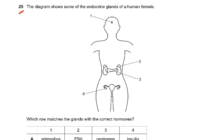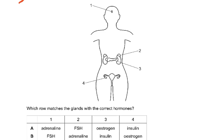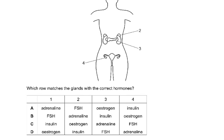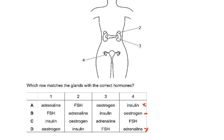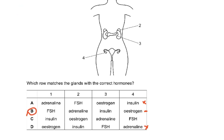Question 25. The diagram shows some of the endocrine glands of a human female: structures 1, 2, 3, and 4. Structure 4 is the ovaries, 2 is the adrenal glands, 3 is the pancreas, and 1 is the pituitary gland. Which row matches the gland with the correct hormones? Structure 4 does not produce insulin and adrenaline — it's the ovaries, and it doesn't produce FSH either, as that's produced by the pituitary. So it can only be estrogen. The answer is B: 1 produces FSH, 2 (adrenal gland) produces adrenaline, 3 (pancreas) produces insulin, and ovaries produce estrogen.